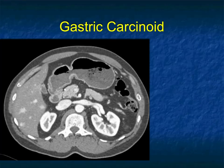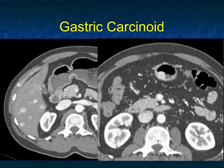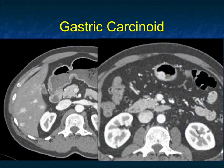Now, another patient with some vague abdominal pain — you can see multiple vascular lesions in the liver and a vascular two-centimeter mass in the body of the stomach. Ectopic pancreas could be in the differential, but the vascular liver lesions are concerning. Could they be atypical hemangiomas? Theoretically, but you really have to worry about metastasis. This was a gastric carcinoid tumor with liver metastasis.